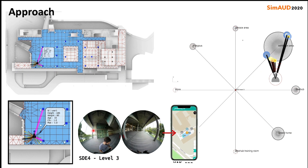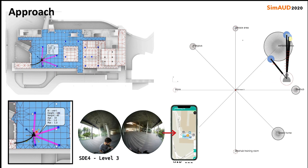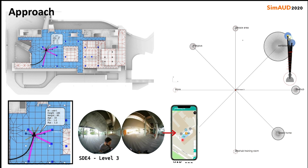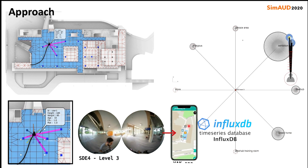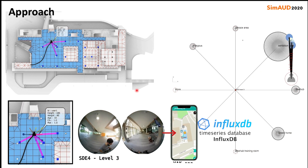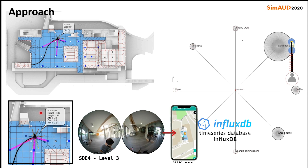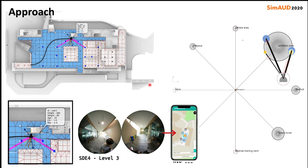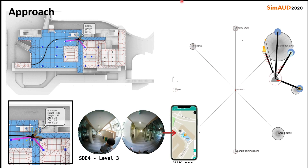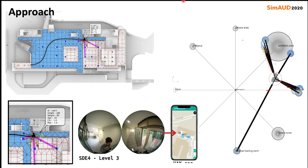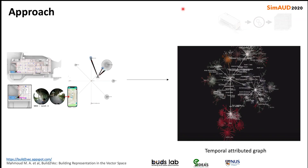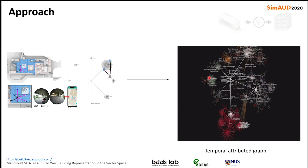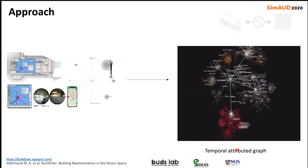This is a demo of a person moving in the building. Their location is captured in real time using the indoor localization system and then this data is sent to a time series database. As this person moves, we can capture their proximity to different finite element cells as well as different spatial objects. This illustrates how it looks when many people are moving in the building and their data are converted into temporal attributed graphs.